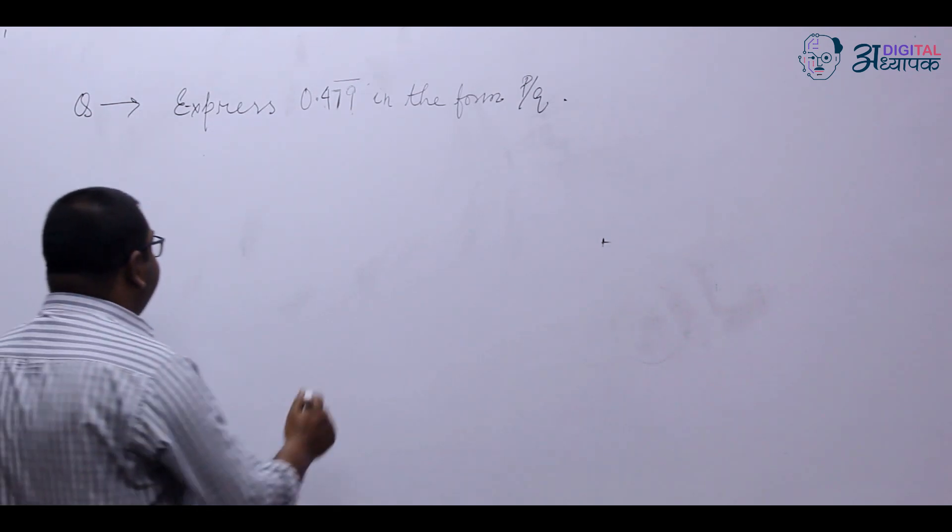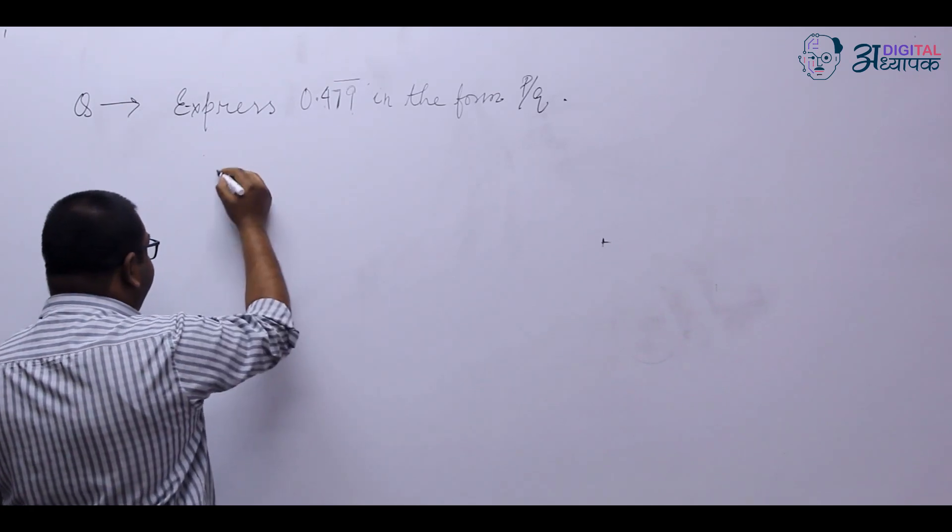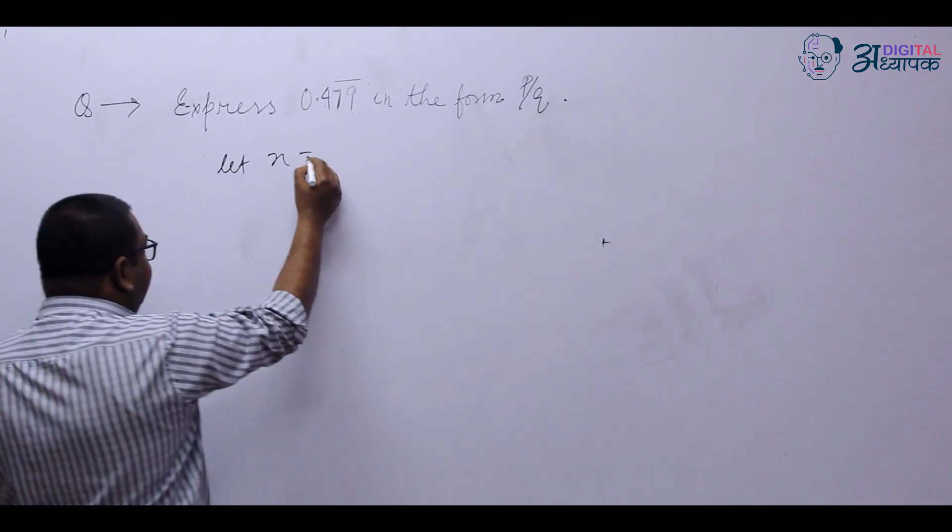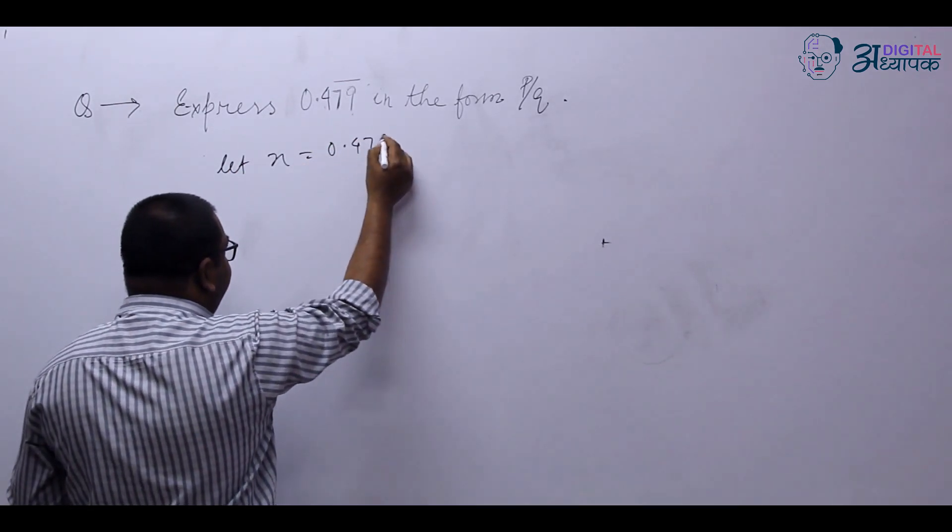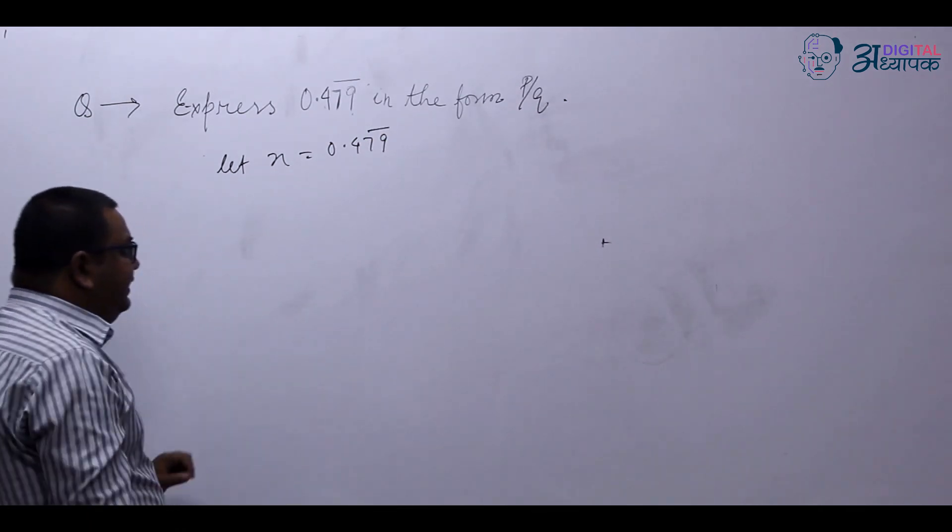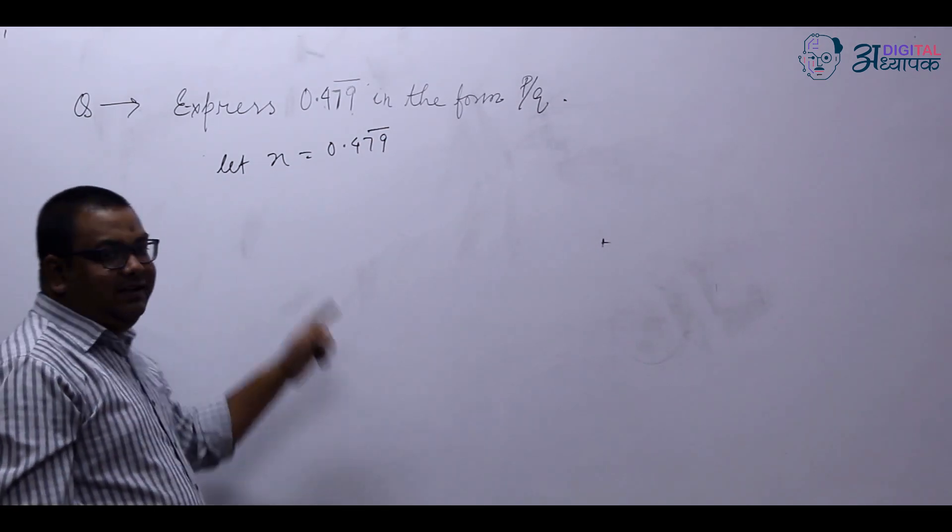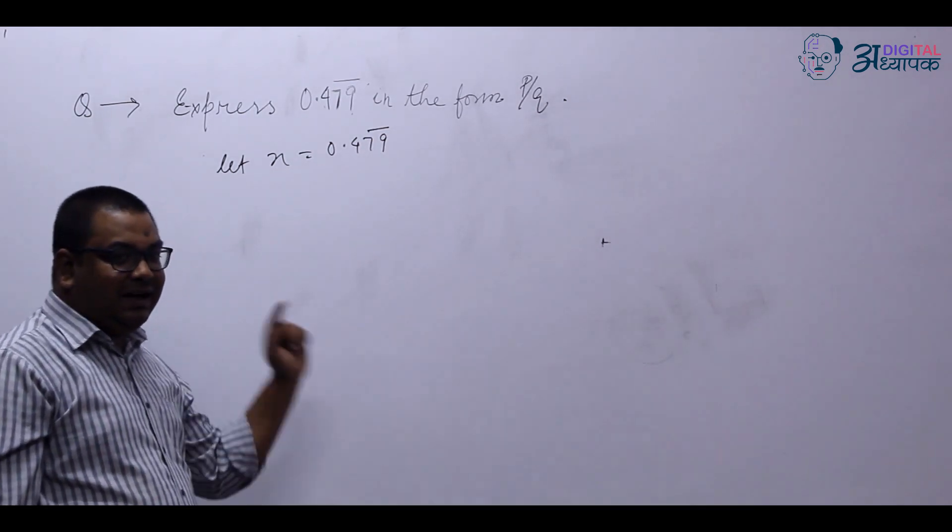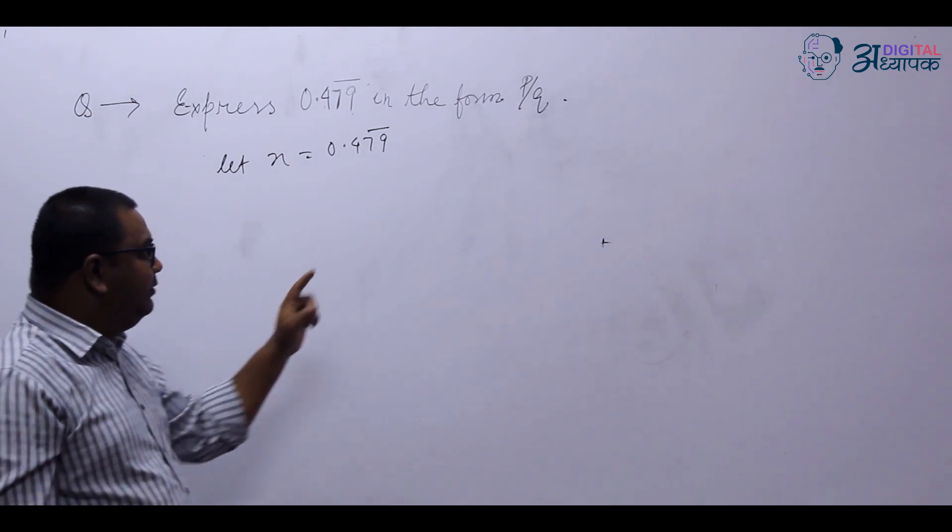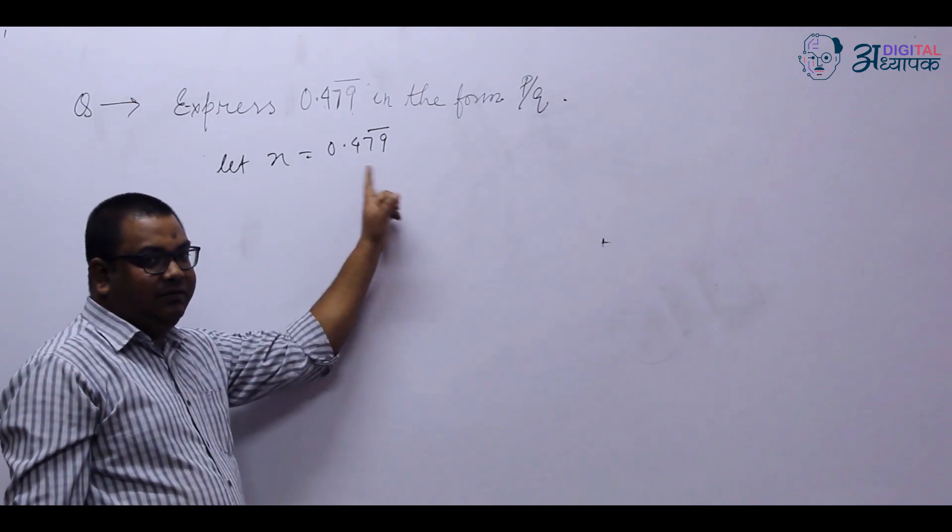Now what is the way out? First of all, we will let this number as X. So let X is equal to 0.479 bar. Again, there is an interesting pattern that all the decimal places after the decimal are not repeating. Only 79 is repeating and 4 is not repeating.